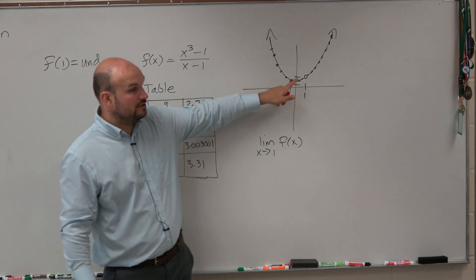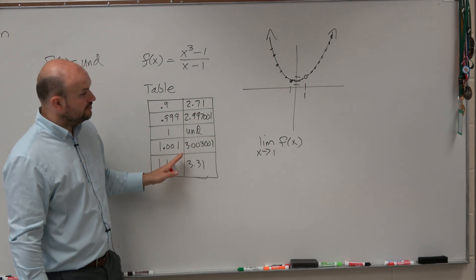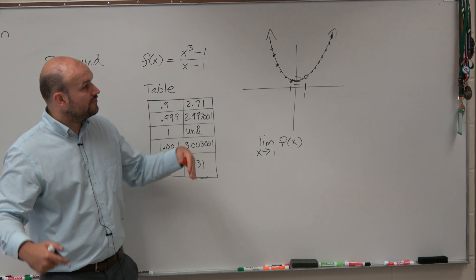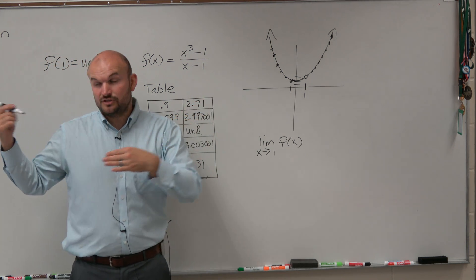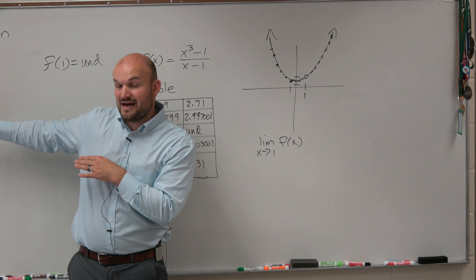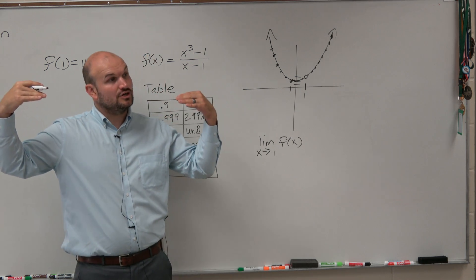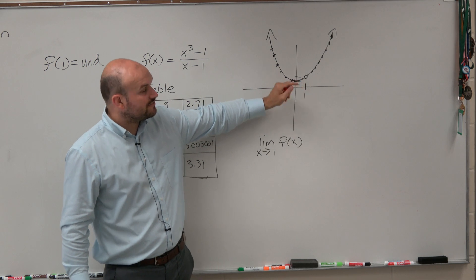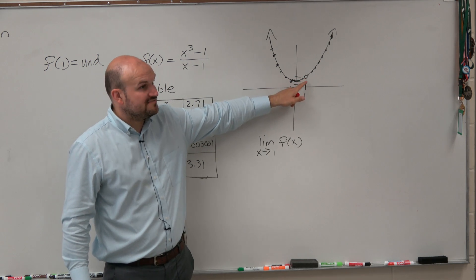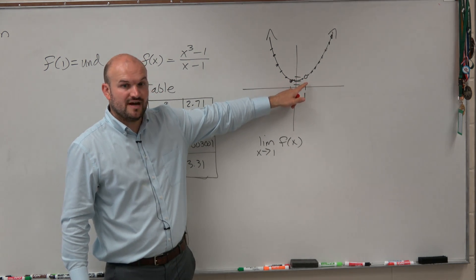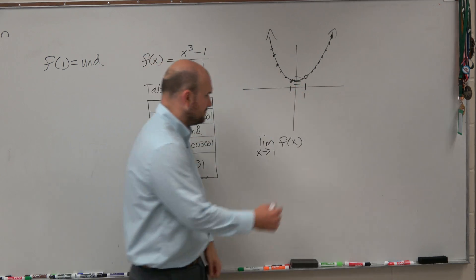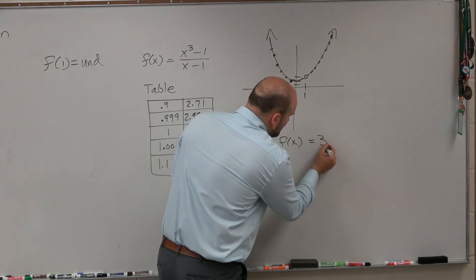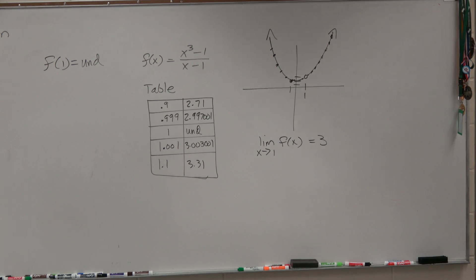So we can all agree, looking at the graph, looking at the table, from the left and from the right, because for the general limit, to evaluate the general limit, it has to go to the same value from the left and from the right. So as we evaluate this from the left and from the right, this value is approaching the value of 3. And that's all you guys would answer, okay?